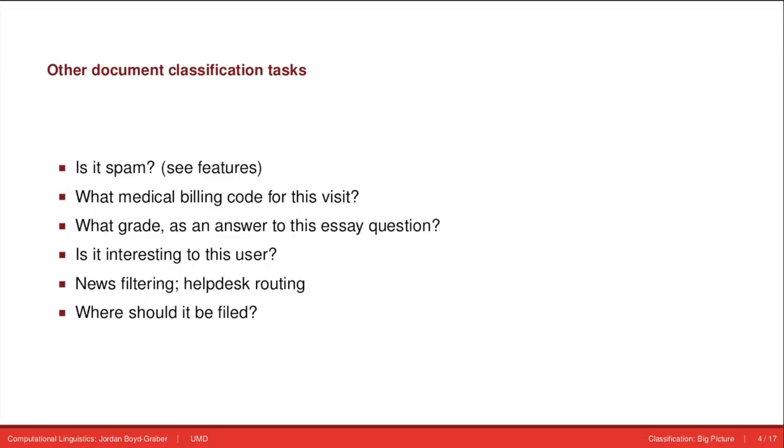Let's say someone submits an essay exam to TOEFL or the SAT. What grade should that person get? This is a hugely important task for which people are using classification. Let's say you have a new research paper. Should Google Scholar show it to you because it would be interesting? Similarly, when calls come into a help desk or when news appears on the web, how should it be filtered? In general, you can think about any filing system as a classification task that hasn't yet been automated. Often businesses want to automate these tasks.